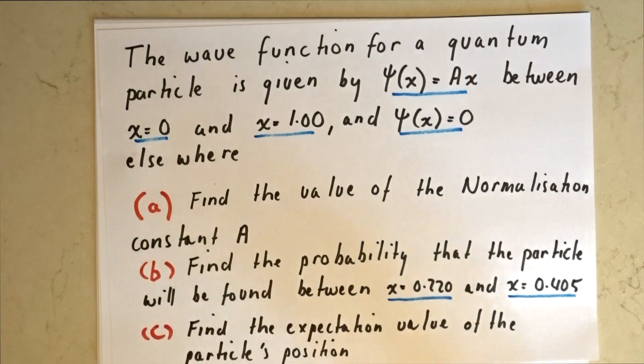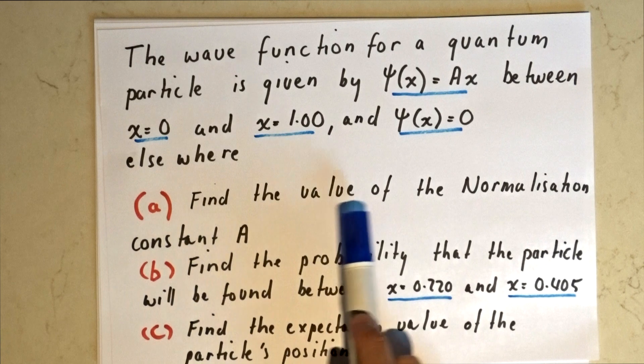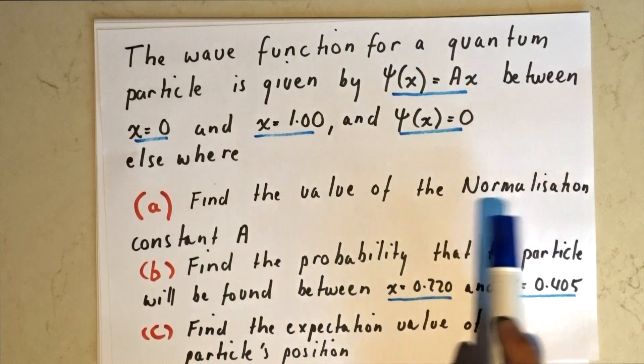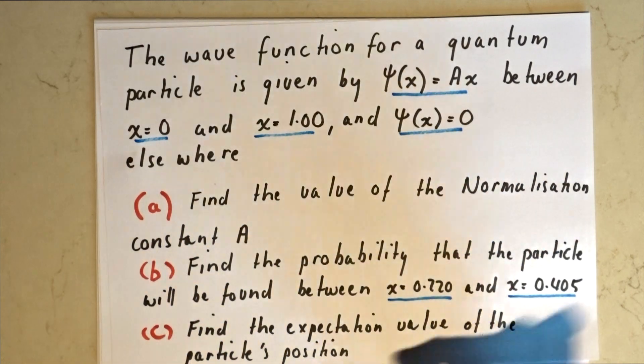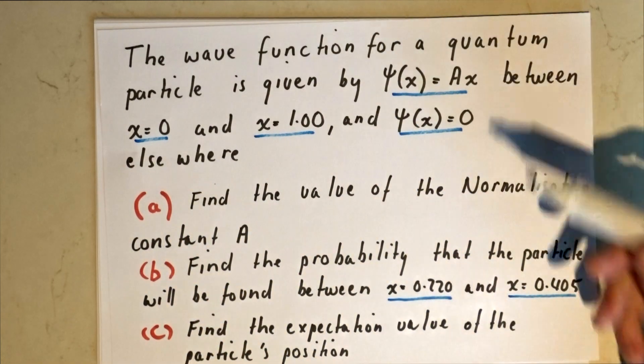What we're trying to do first of all is find the value of the normalization constant A — that's this guy up here.